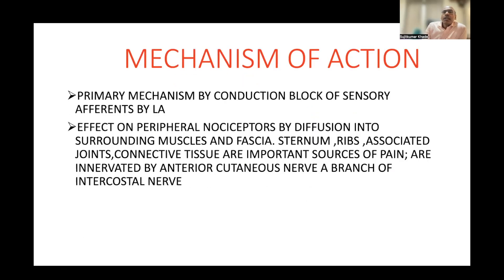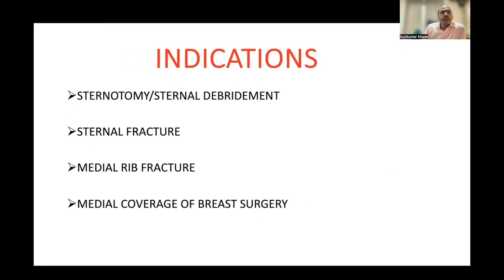The primary mechanism is by conduction block of sensory fibers by local anesthetic effect on peripheral nociceptors, by diffusion into surrounding muscles and fascia. The sternum, ribs, and associated joints and connective tissue are important sources of pain, innervated by the anterior cutaneous nerve, a branch of the intercostal nerve.